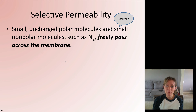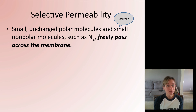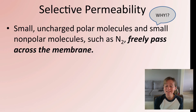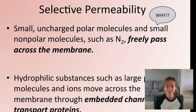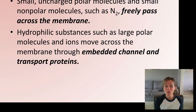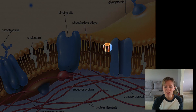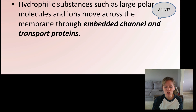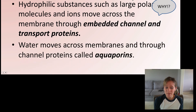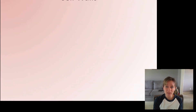Selective permeability: I'll tell you what can pass through, and I want you to write in your notes your hypothesis as to why. Small uncharged polar molecules and small non-polar molecules such as nitrogen gas can freely pass through the membrane — you tell me why. Hydrophilic substances such as large polar molecules and ions can move across, but they need embedded channel and transport proteins — you tell me why. Water can cross the membrane but must go through channel proteins called aquaporins — and again, you tell me why they need aquaporins.